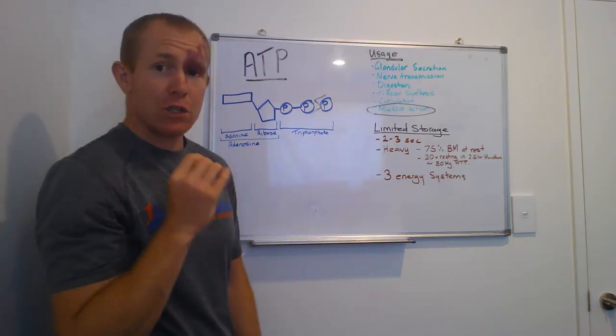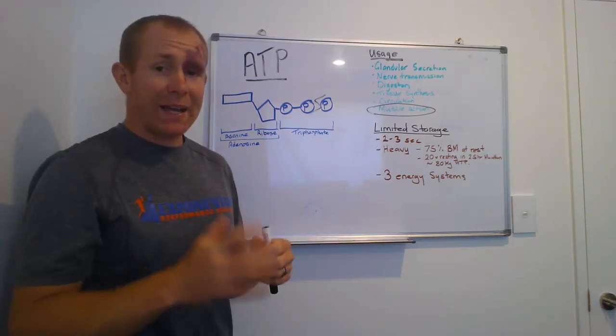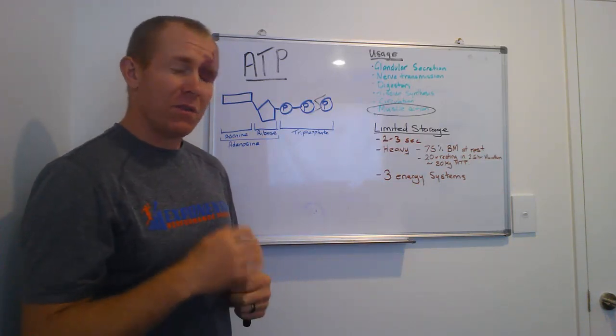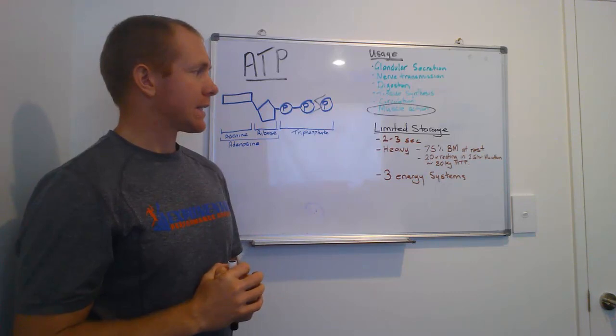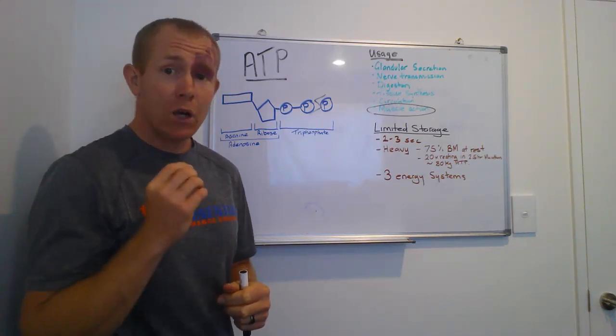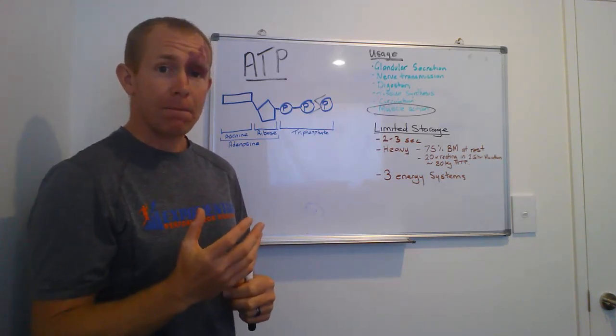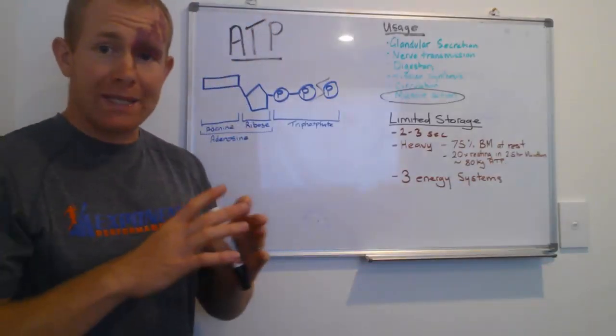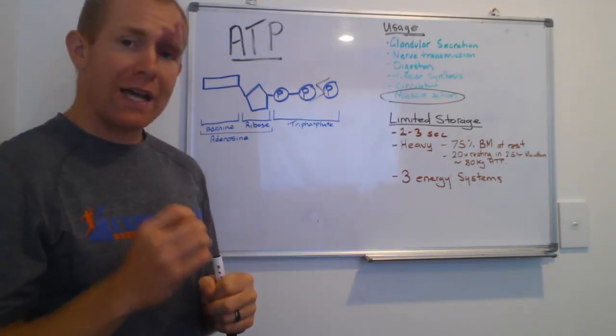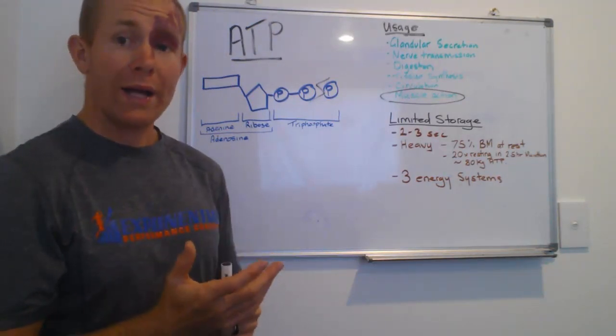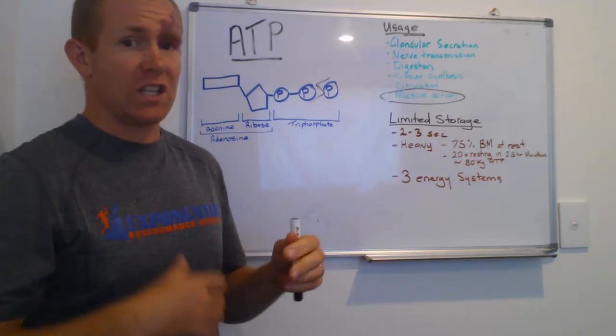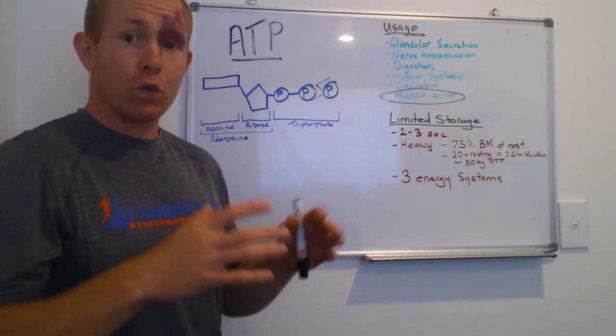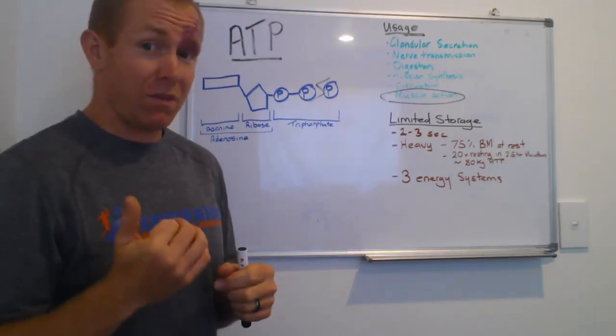Now, ATP has a limited storage in our body. We only have actually about two to three seconds of ATP stored in the muscle. And the primary reason behind this is because ATP is actually really, really heavy. Seems strange, but it actually is. During the day, if you were to be sedentary all day, the amount of ATP required for you just to live and function is about 75% of your total body weight. Think about that.